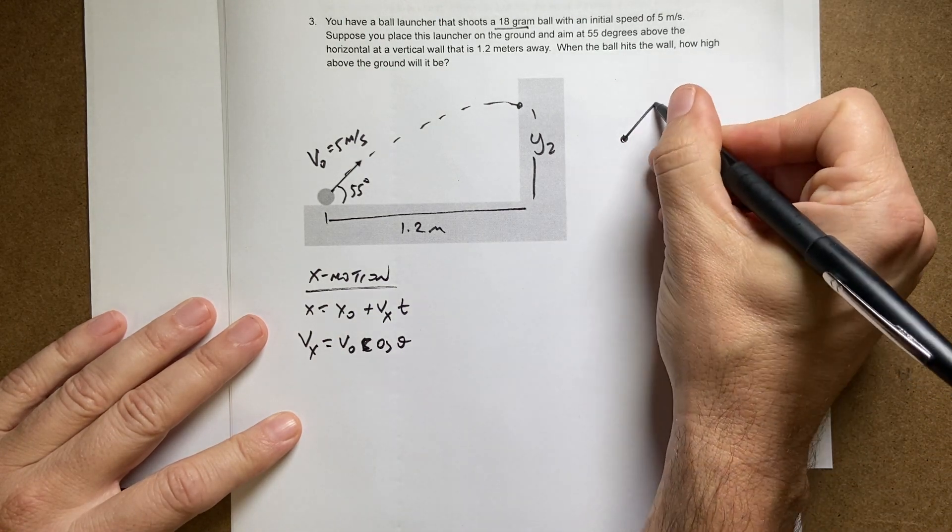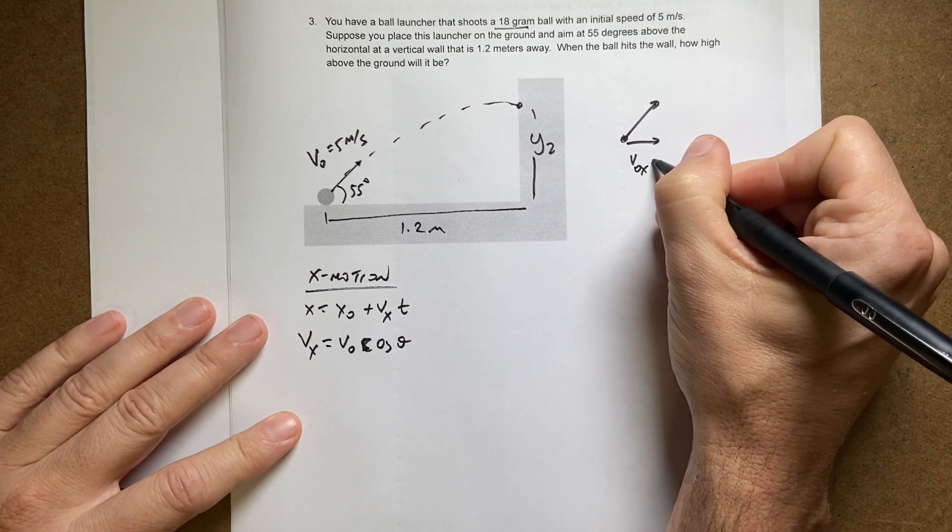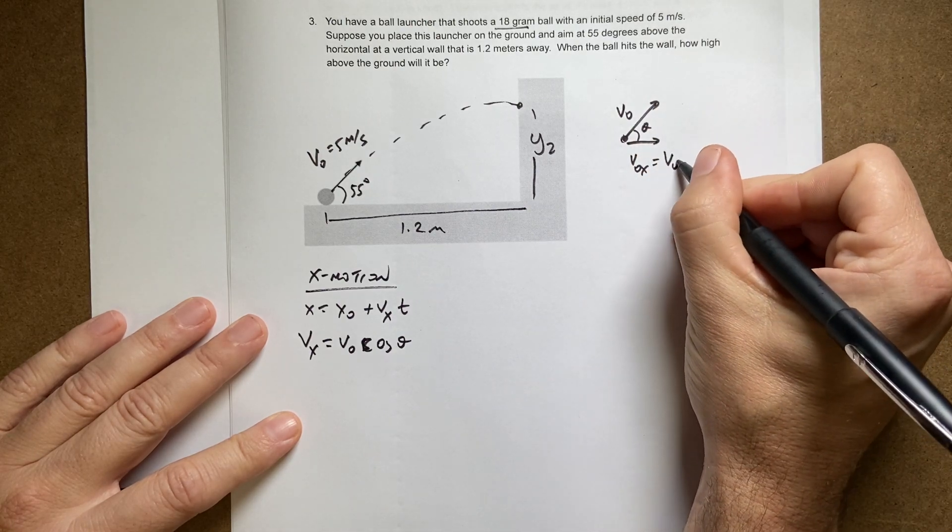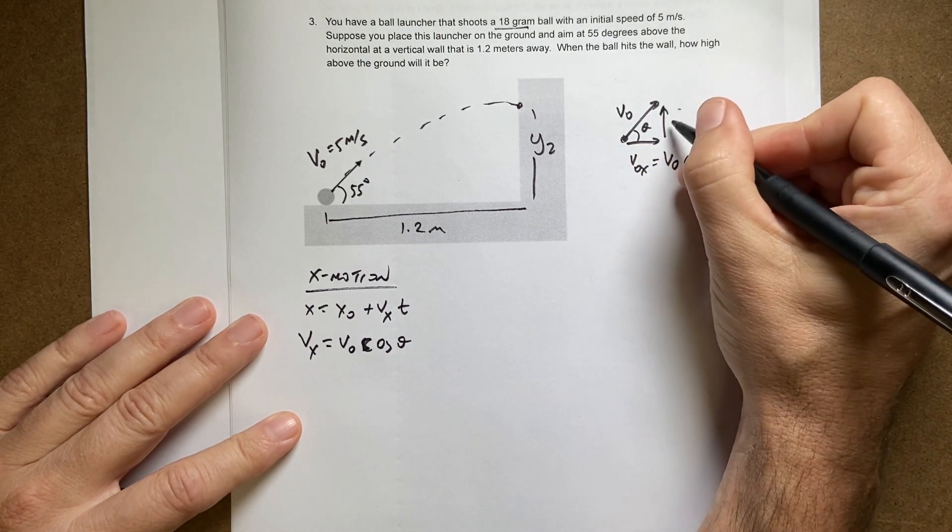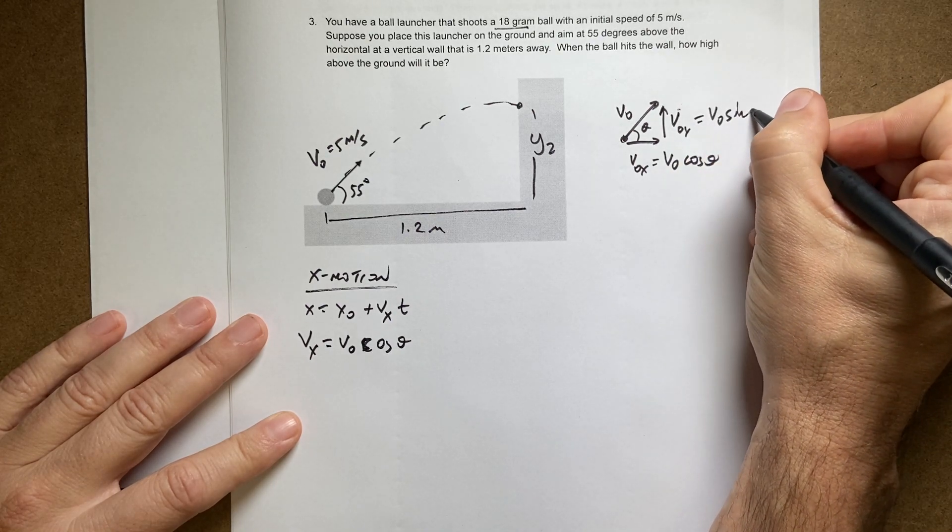Because if I shoot this ball, that's my initial X velocity. V0X is going to be, that's V0, that's theta. V0 cosine theta. My initial Y is going to be V0Y is V0 sine theta.